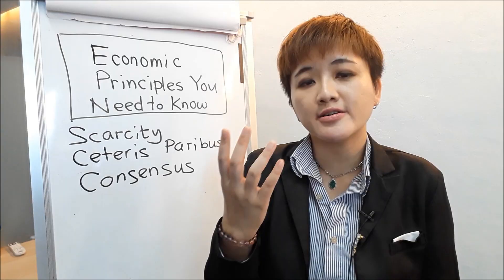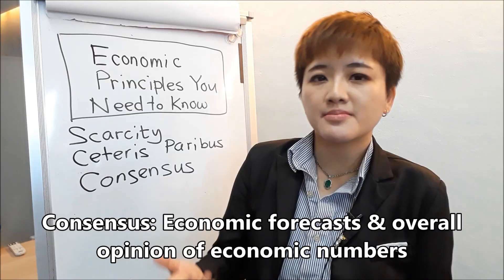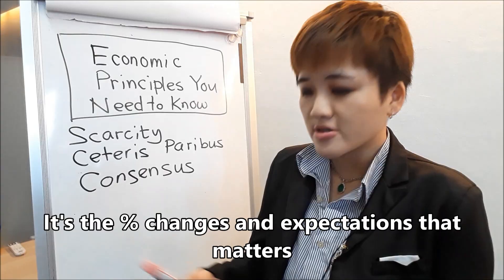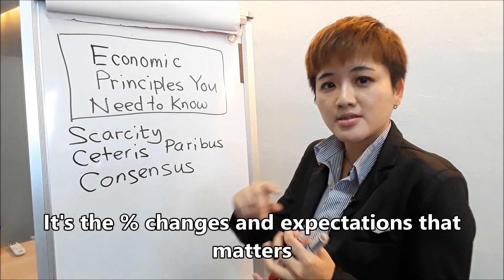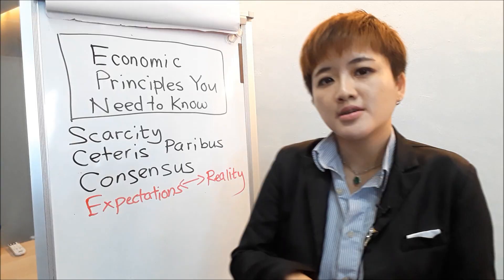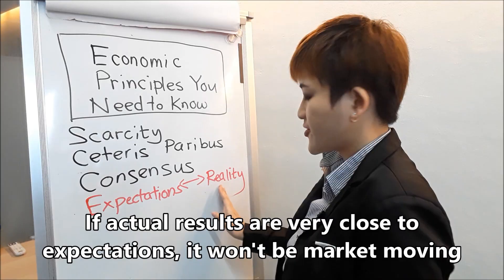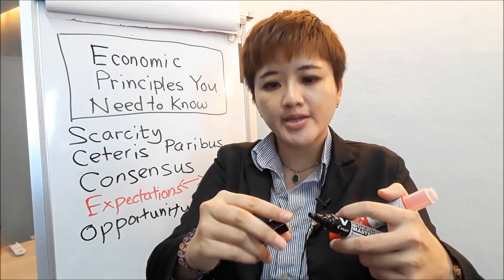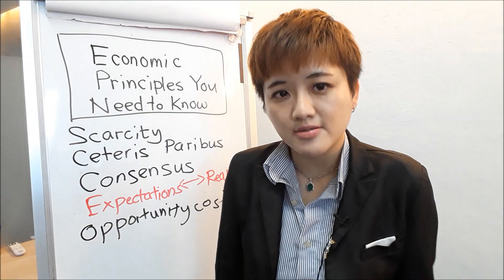You'll come across the term consensus. Every single month, economists publish their forecasts — basically the forecast of what economic numbers are going to turn out to be. It's not about the absolute number that matters; it's not about whether the number comes up positive meaning the currency or stock goes up. It's about expectations and percentage change. If expectations are very different from reality — meaning the actual results — it's going to move the markets a lot. But if expectations are in line with reality, the markets won't move that much. Opportunity cost: if you choose to buy a book today, your opportunity cost could be using that money for a staycation.